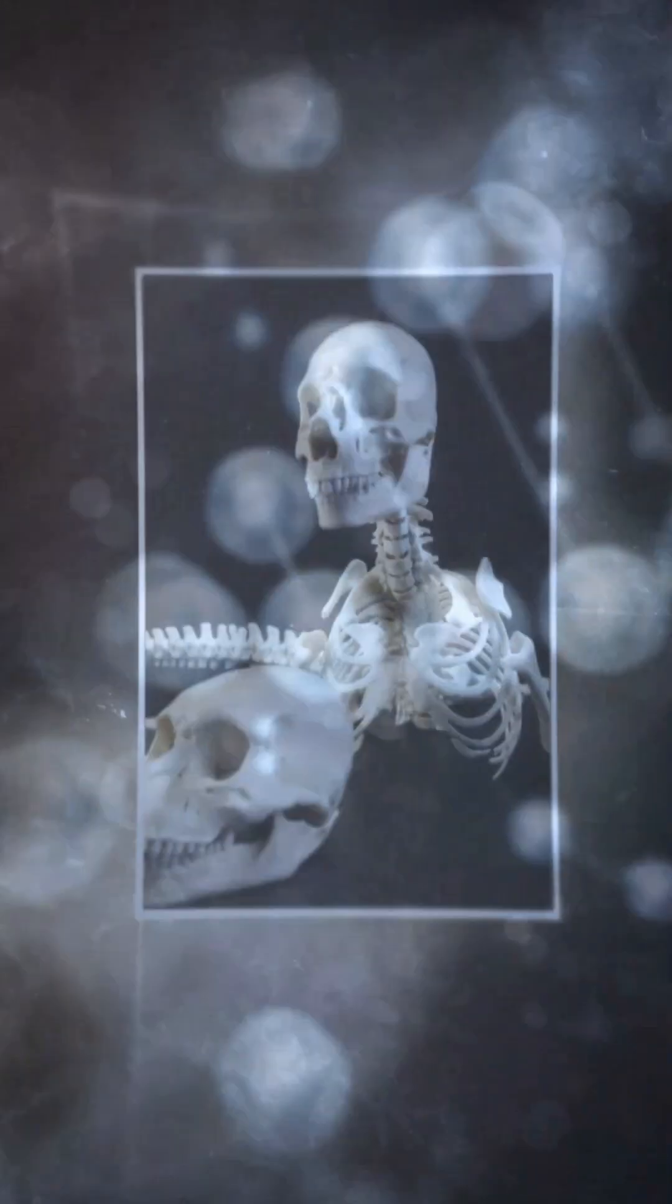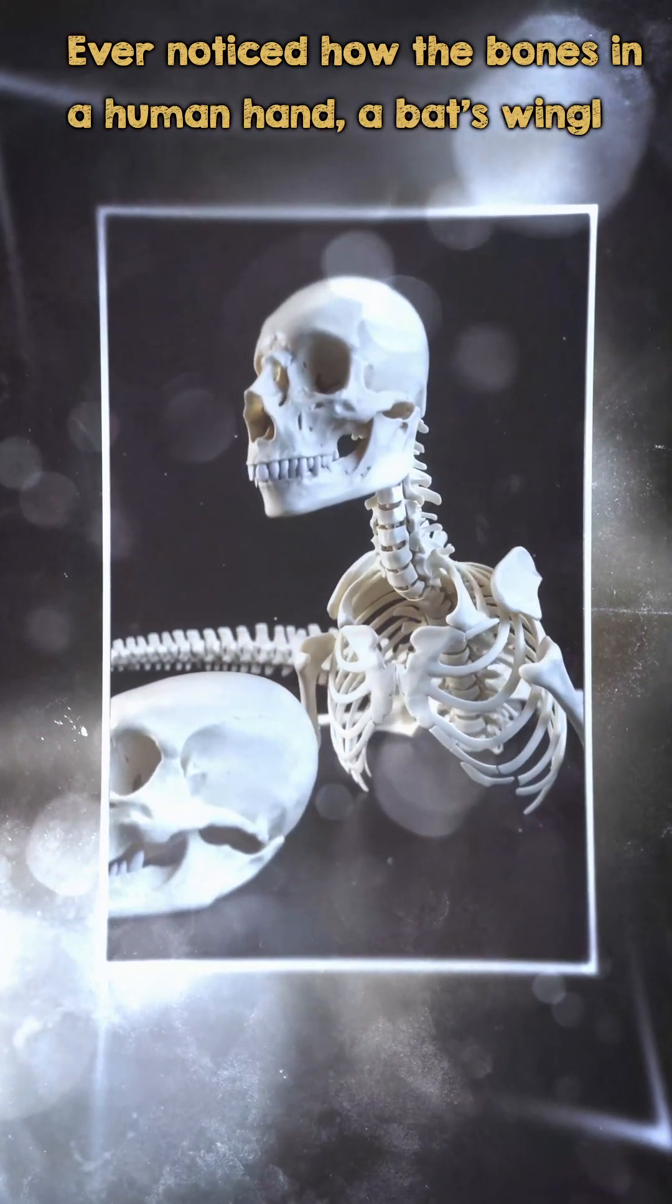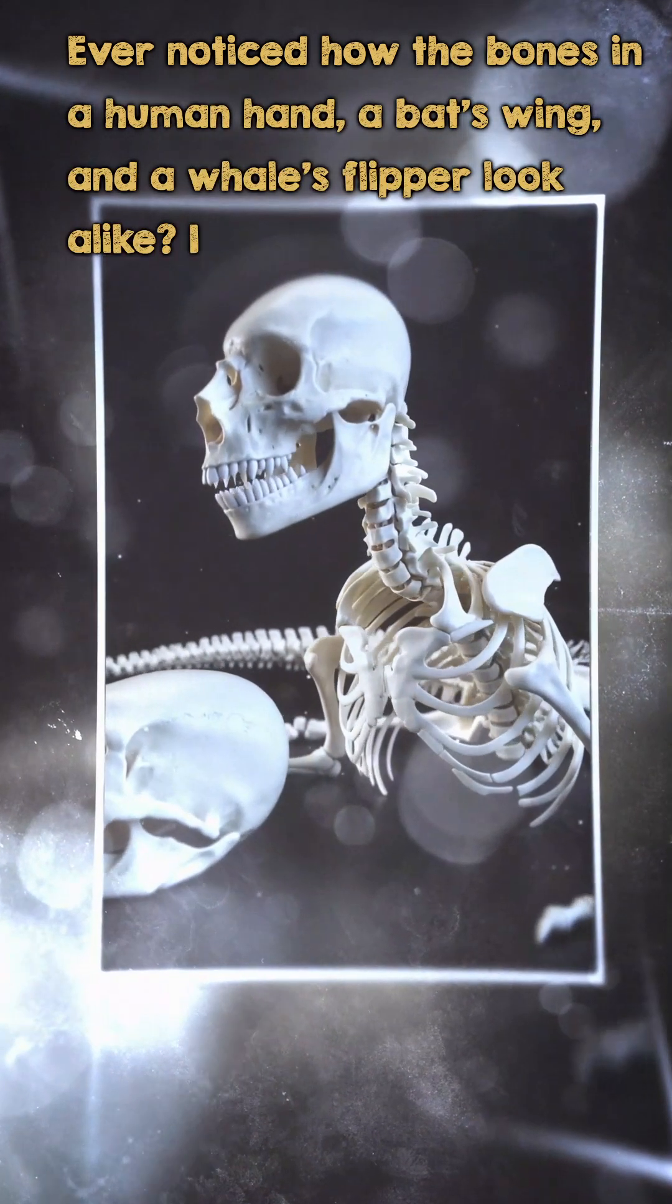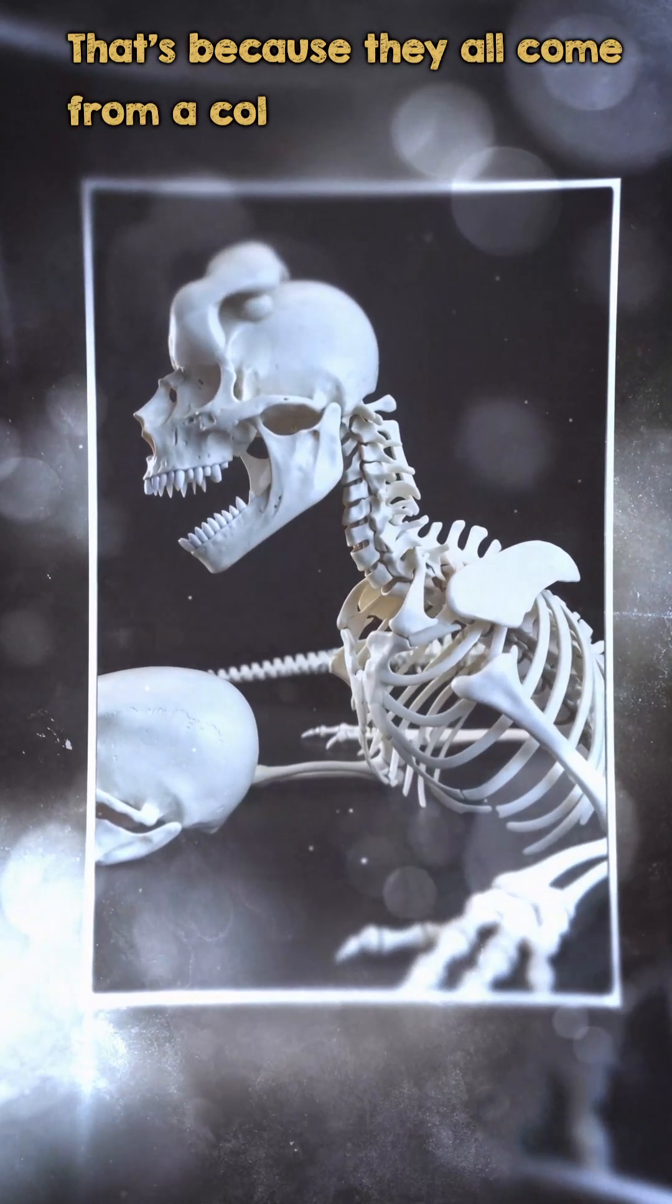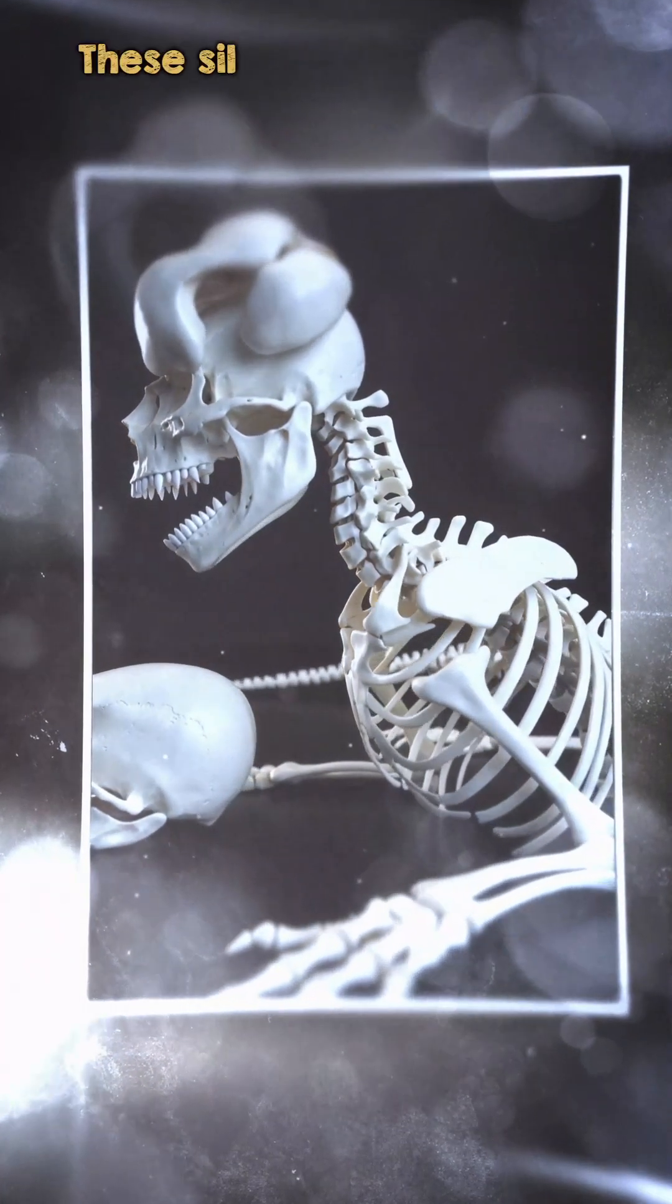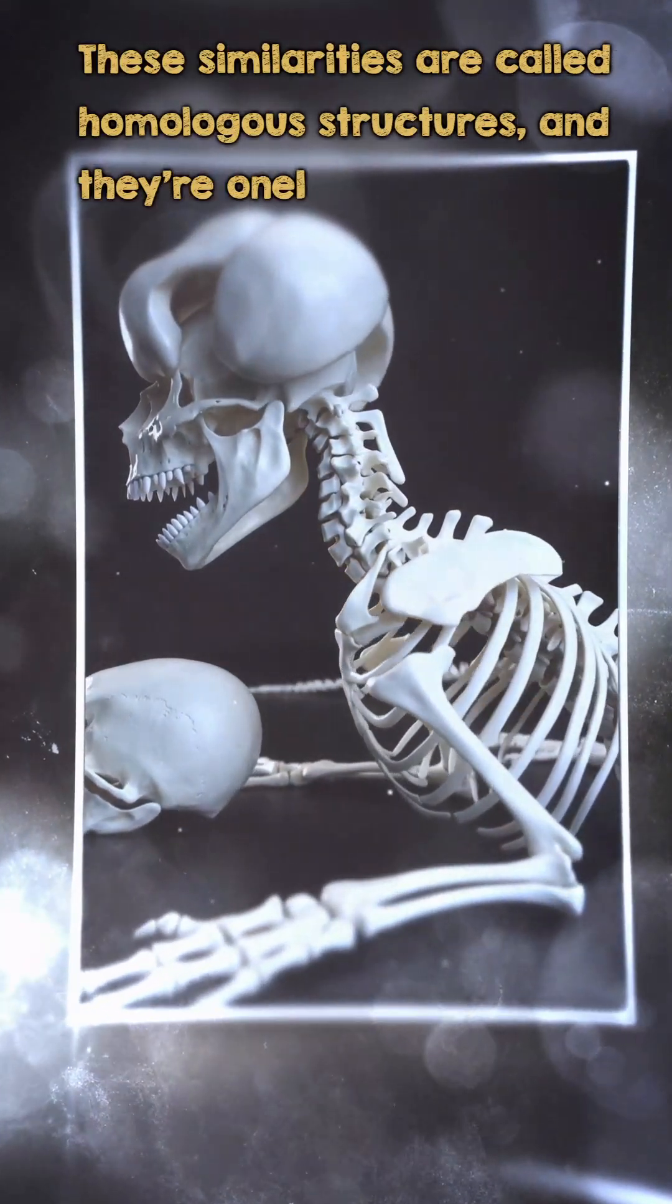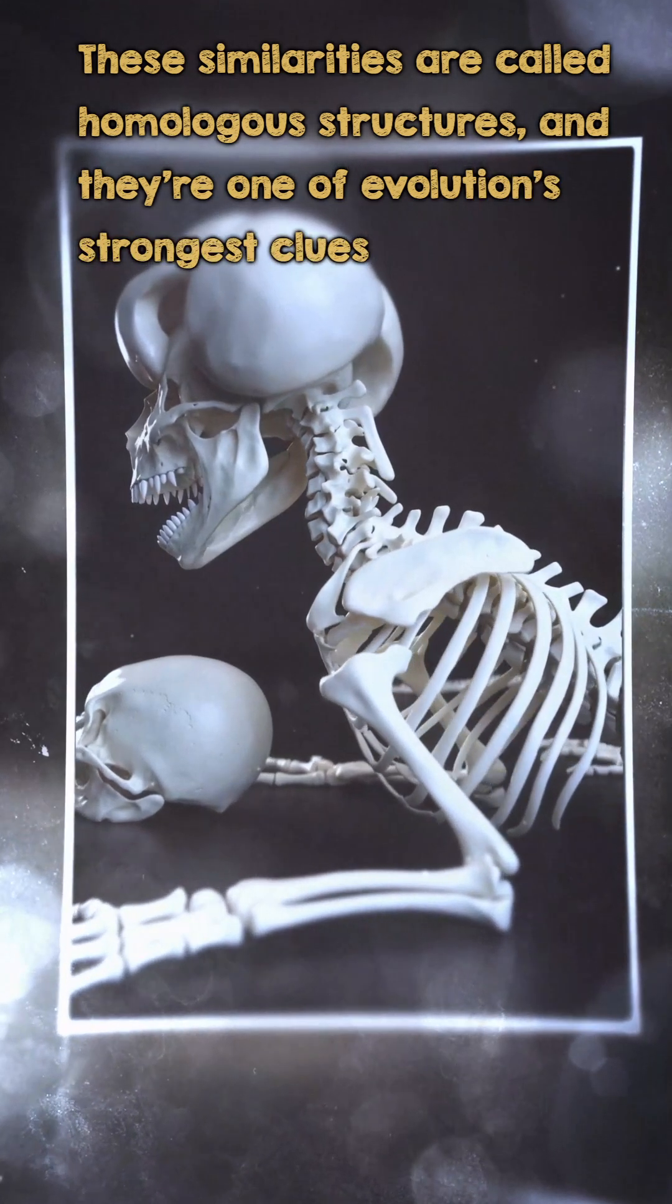Anatomical similarities. Ever noticed how the bones in a human hand, a bat's wing, and a whale's flipper look alike? That's because they all come from a common ancestor. These similarities are called homologous structures, and they're one of evolution's strongest clues.